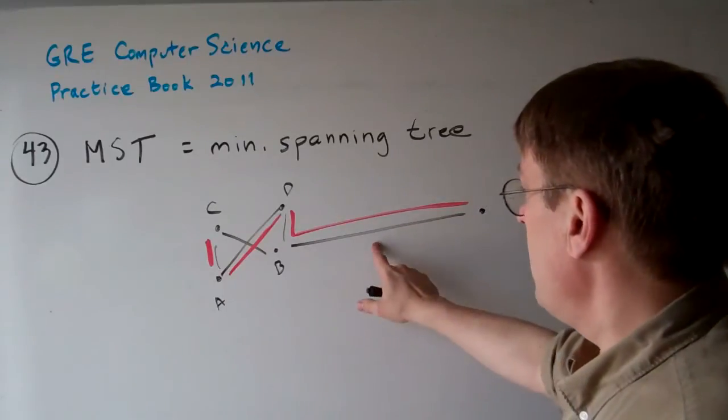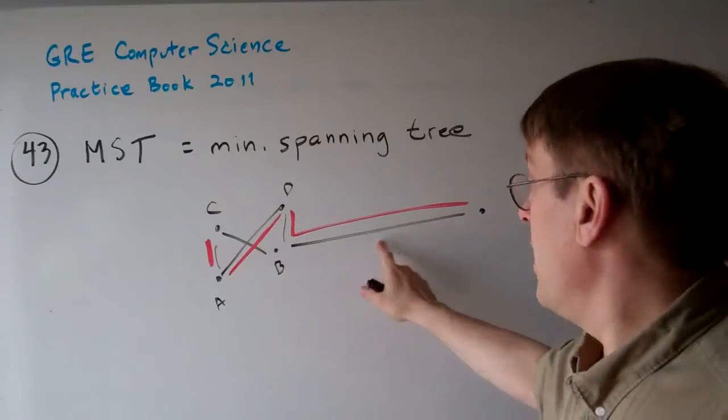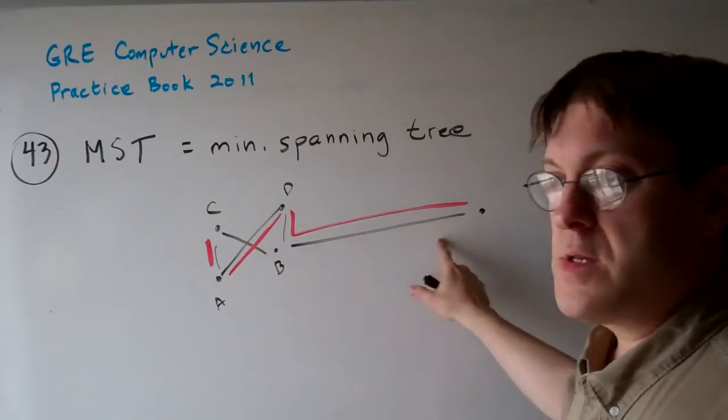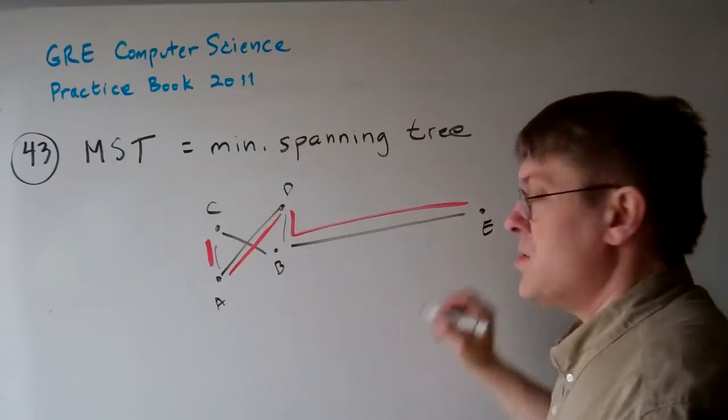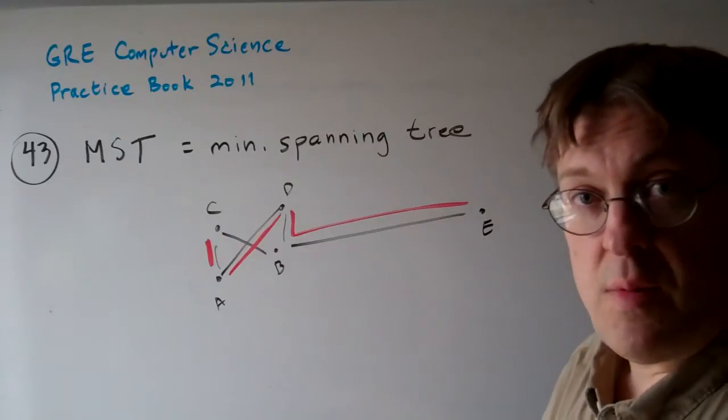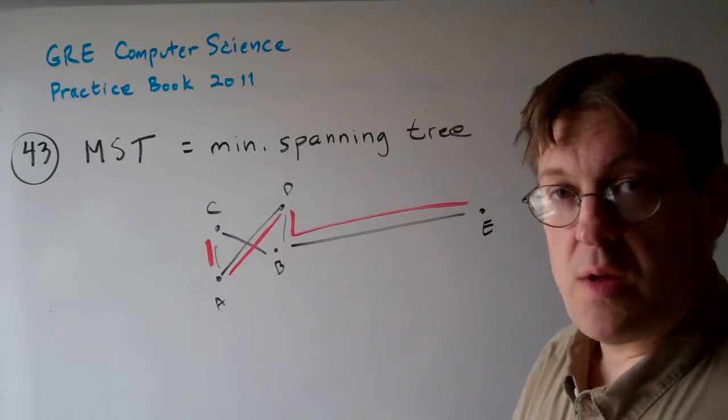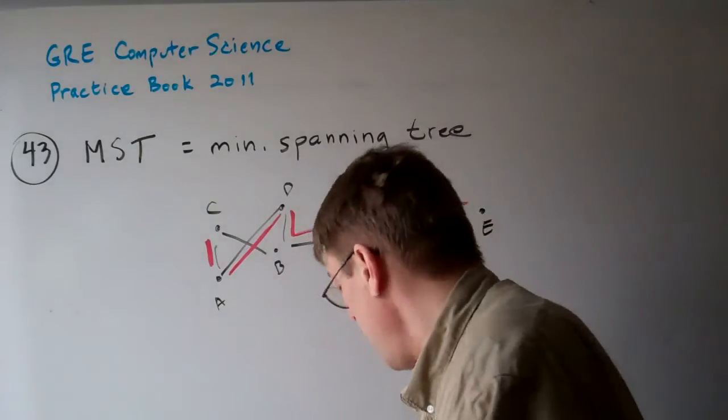So now we can see here that even though this one may well be the longest, there's no other connections to this point E out here. So we know for sure three can't be true. The minimum spanning tree may very well contain the longest link of the graph.